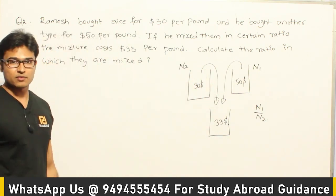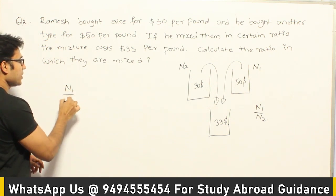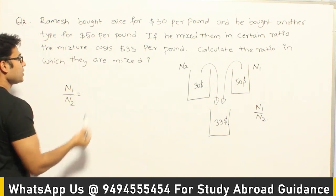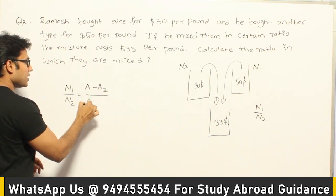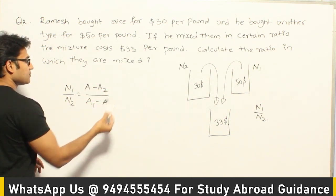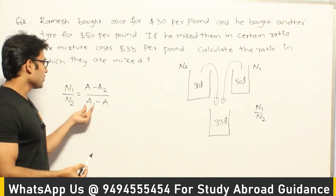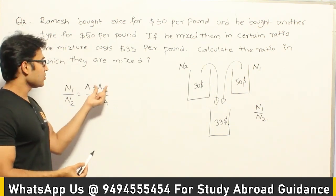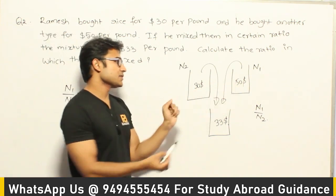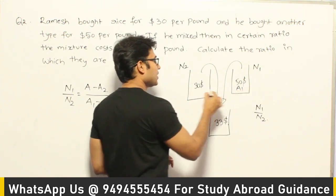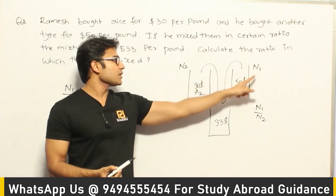There are various methods of finding it out. One way is, using the formula we have derived: N1/N2 = (A - A2) / (A1 - A). The convention is that A1 is the one with the higher value and A2 is the one with the lower value. So A1 corresponds to N1 and A2 corresponds to N2.